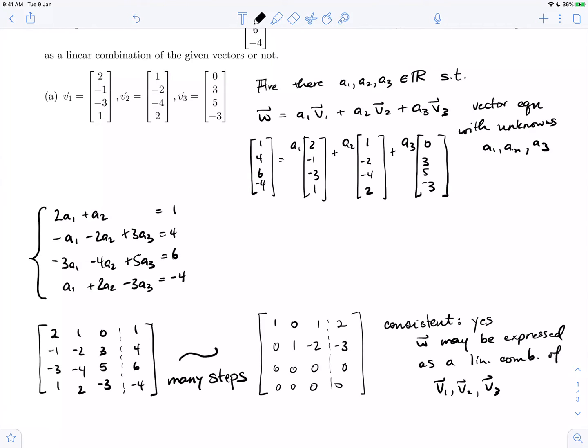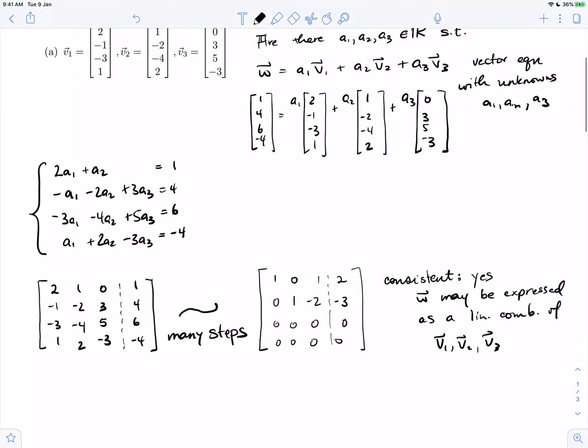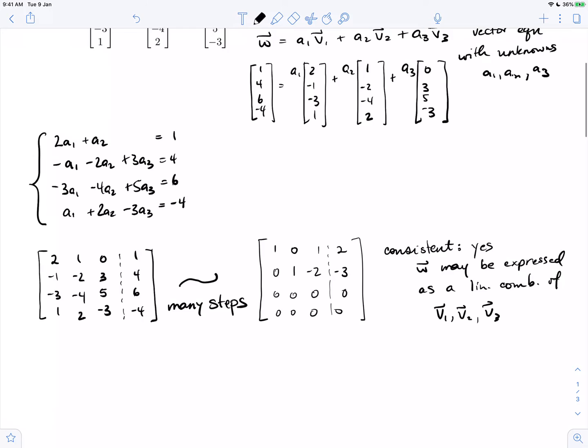As a linear combination of v1, v2, and v3, there are constants a1, a2, and a3 that make this consistent. If we wanted to go further, we would see the rank of our matrix is 2, which is less than 3, the number of variables, which means we have infinitely many solutions.